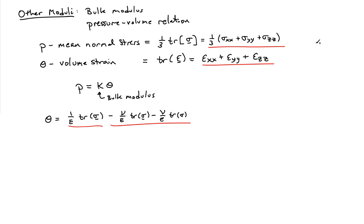And now I can collapse these terms a little bit. And if I do that, I find that theta is equal to 3, 1 minus 2 nu over E times p. And so now I can extract out that the bulk modulus is E over 3, 1 minus 2 nu. But the bulk modulus you'll find in tables and material properties and things like that. So it's a useful thing to know about.